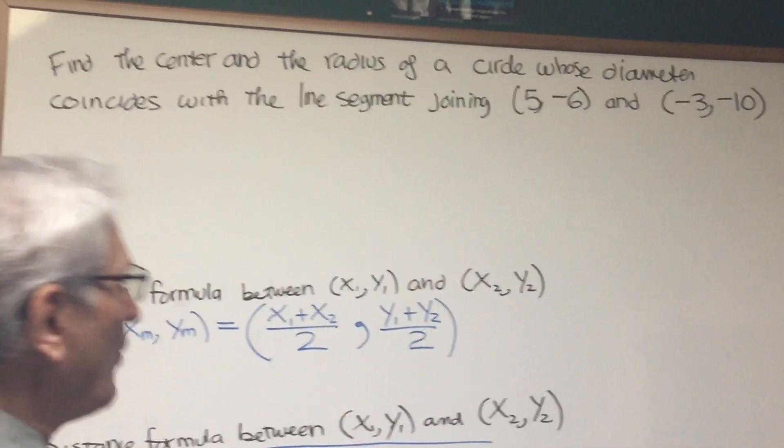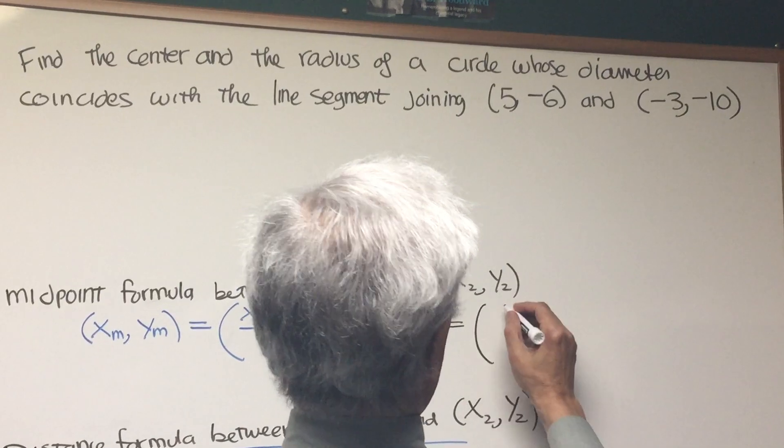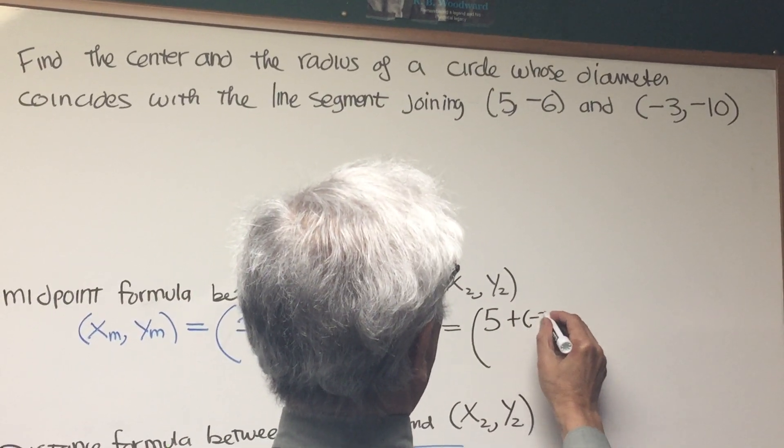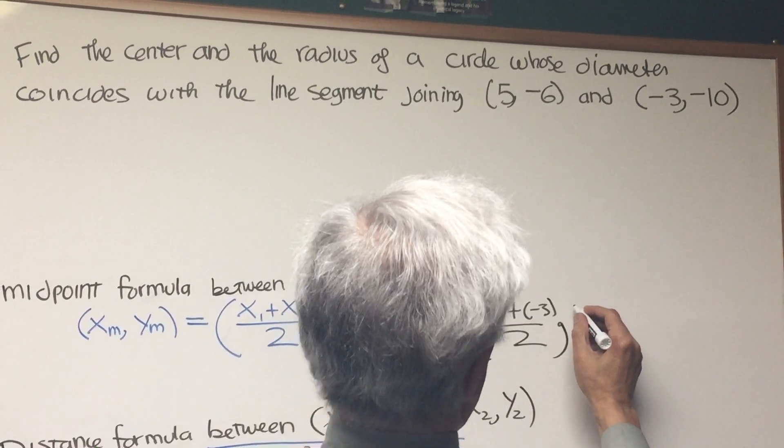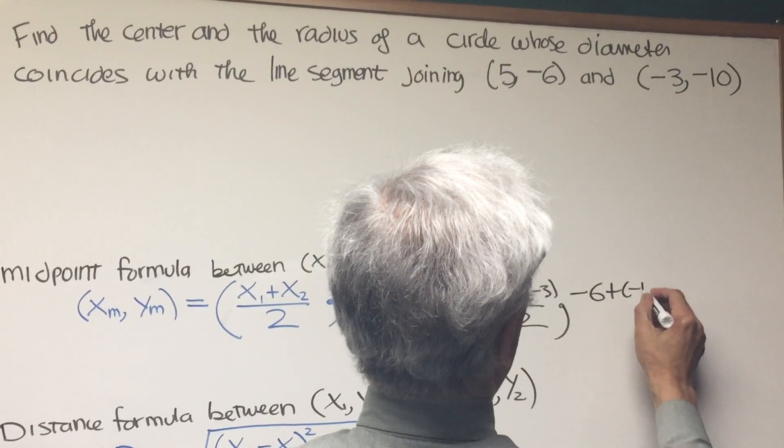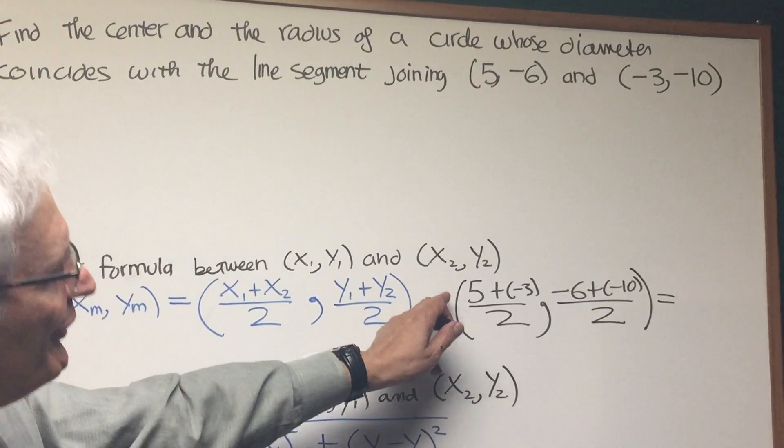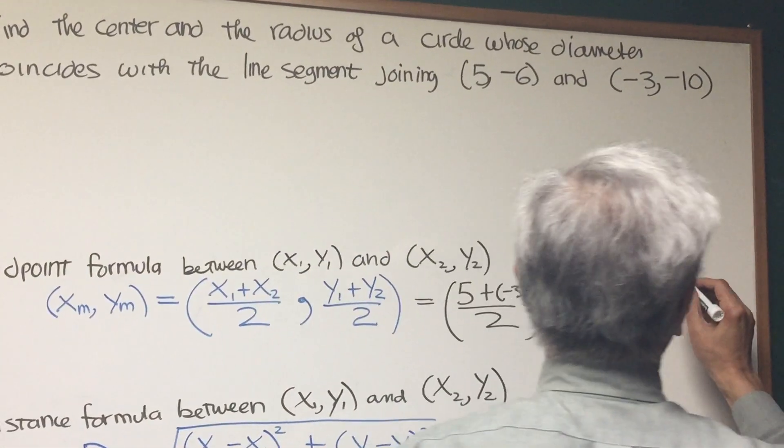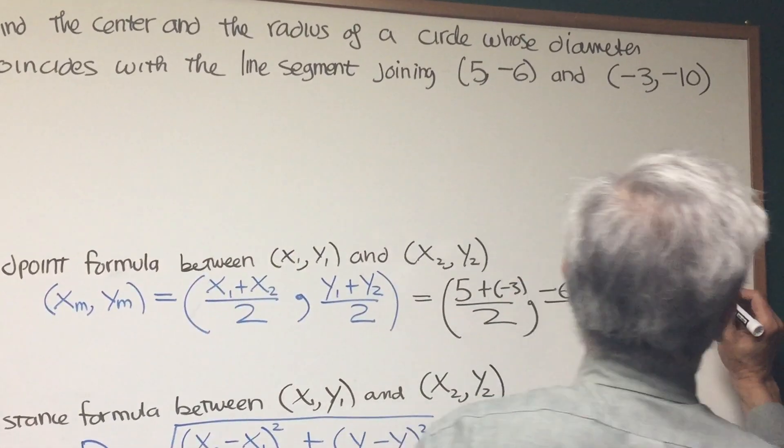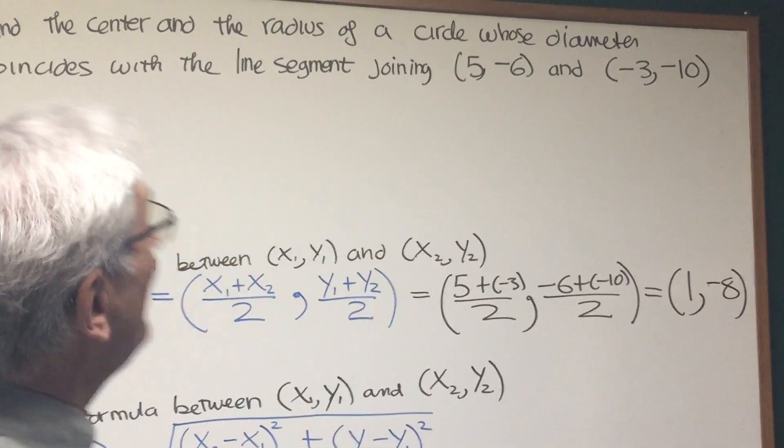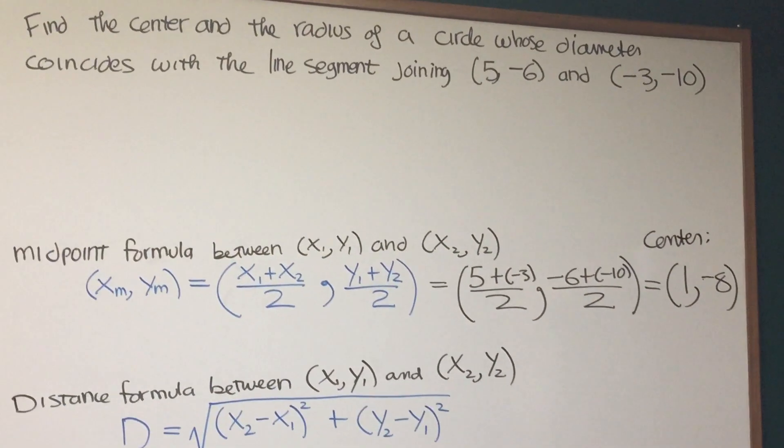(x₁ + x₂)/2, (y₁ + y₂)/2. And for the two points in question, we have (5 + (-3))/2 for the x coordinate and (-6 + (-10))/2 for the y coordinate. And that will simplify to 5 minus 3 is 2, 2 over 2 is 1. Negative 6, negative 10 is negative 16, negative 16 over 2 is negative 8. So there we have, that's where the center of the circle is. That's the center of the circle, (1, -8).